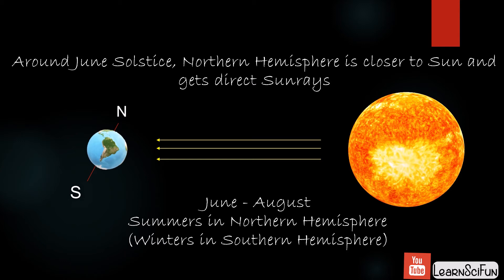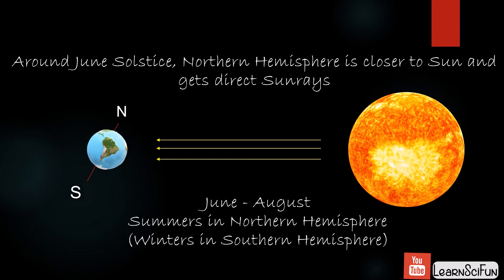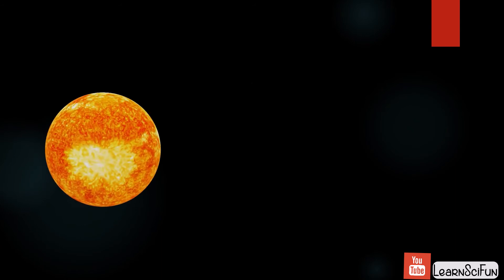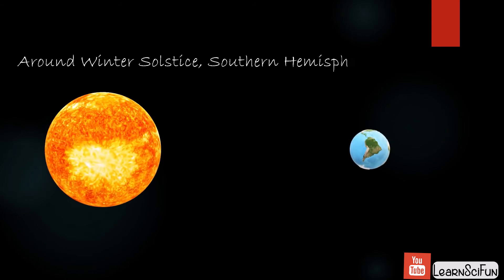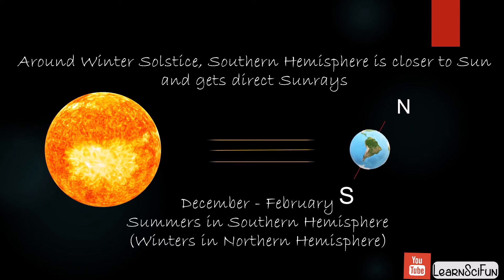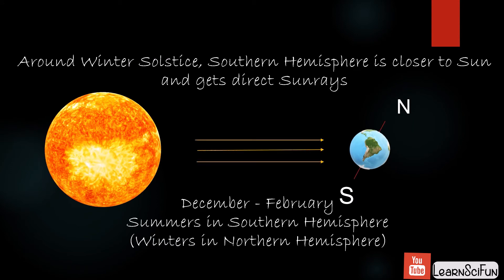The exact opposite happens during the months from December to February, when the Sun's rays fall directly on areas below the equator, as the South Pole tilts towards the Sun. So, January and February are the summer months in the southern hemisphere.